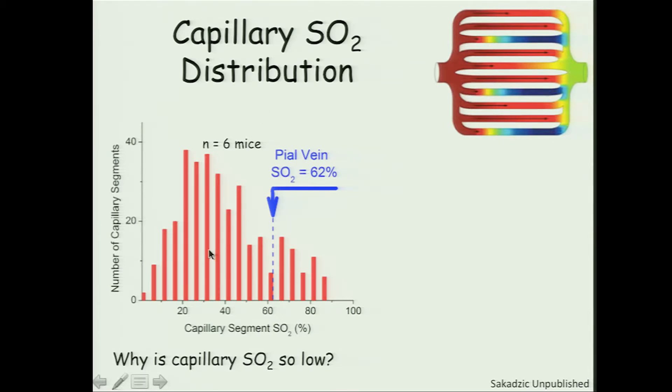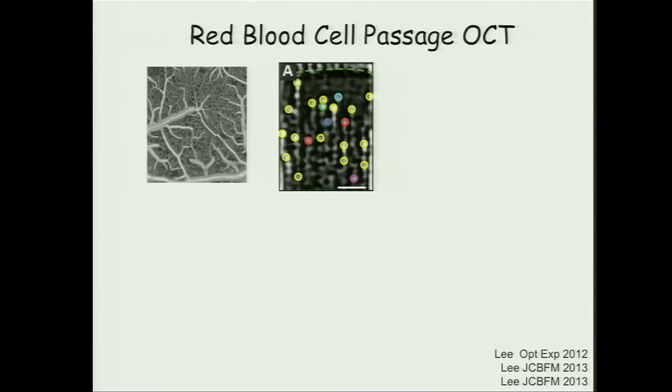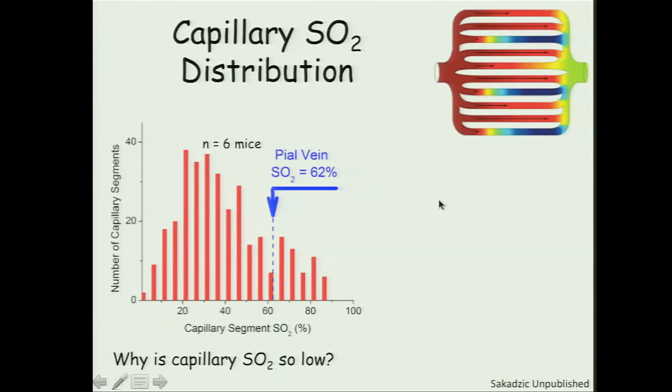The short path length capillaries have high flow and high oxygenation, but the long path length capillaries have low flow and low oxygenation. So spatially, there's more low flow, long path length capillaries. But the veins are really representing the flow weighted average of the SO2. And so it's those high flow, high oxygenated capillaries that really dominate the venous SO2.